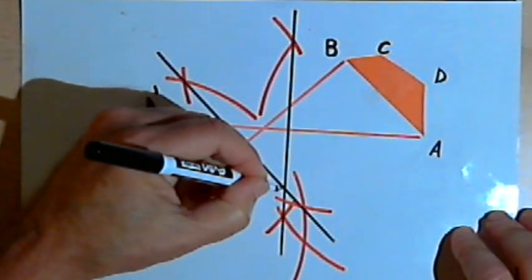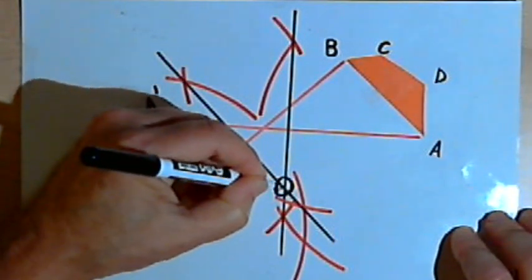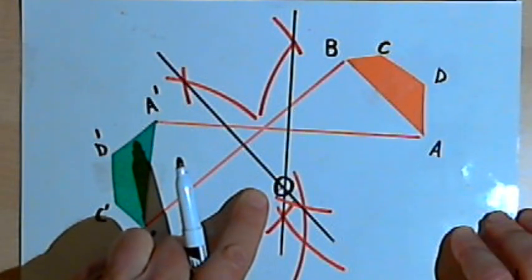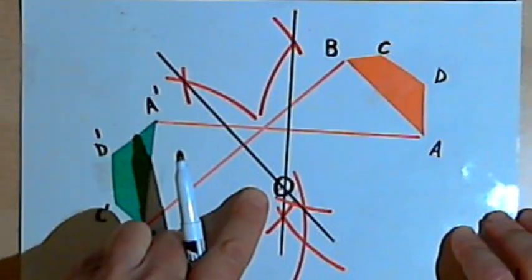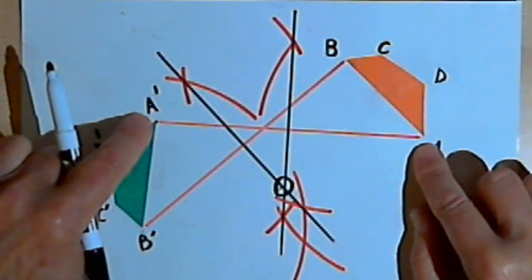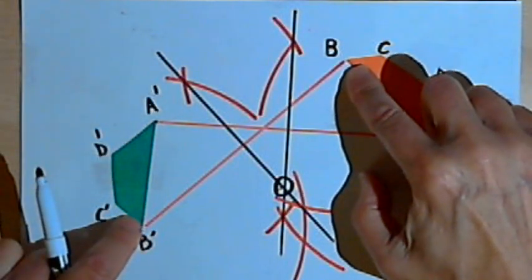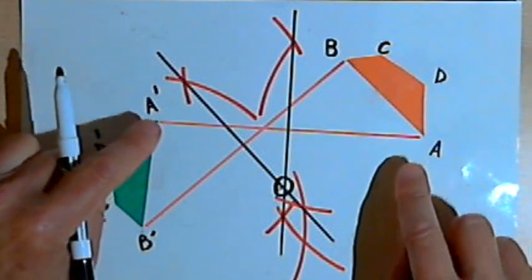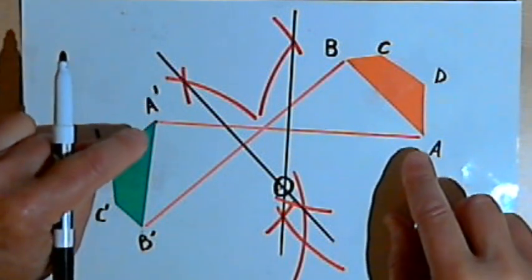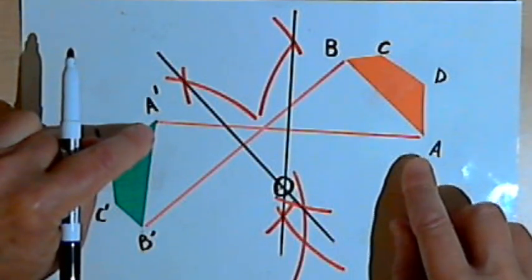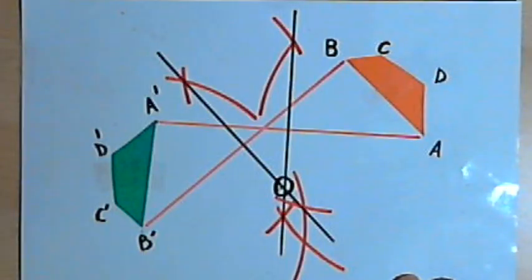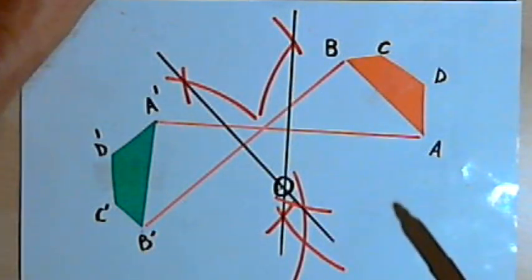And the place where those two bisectors intersect each other is the center of rotation. So once again what I did was I connected two pairs of corresponding points, then I found the perpendicular bisectors for the line segments that I made by connecting those points. The place where the perpendicular bisectors intersect each other is the center of rotation.